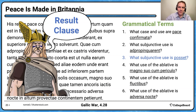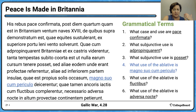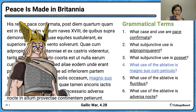Now, uses of the ablative. For 'magno suo cum periculo': when 'cum' patterns with the ablative it's used for accompaniment or manner. This doesn't look like accompaniment since it's 'with danger,' not a person — so this is an ablative of manner.